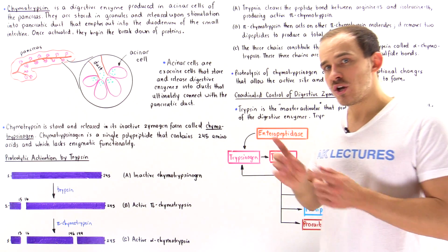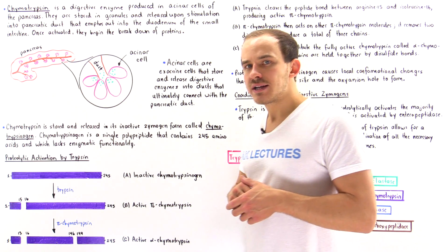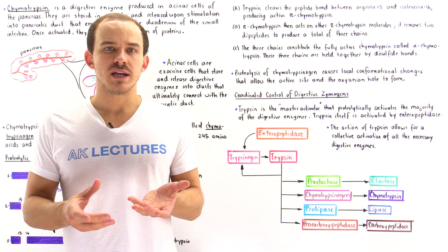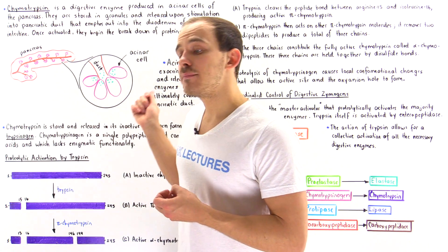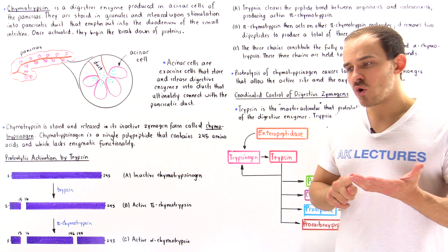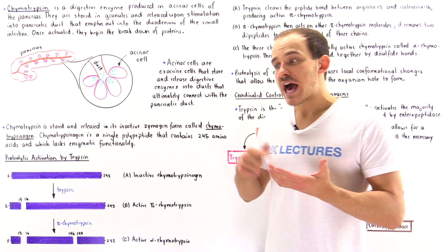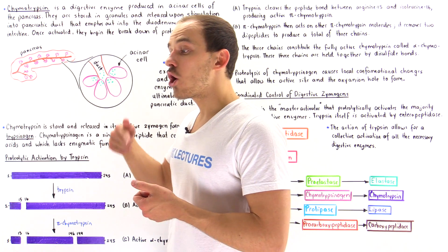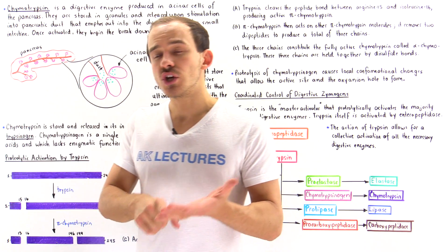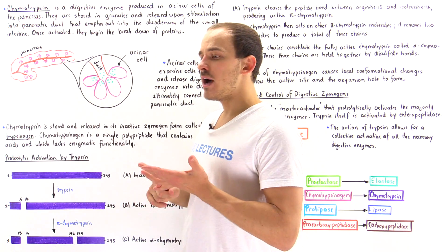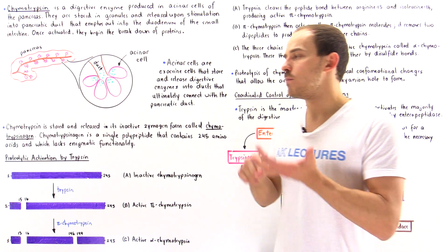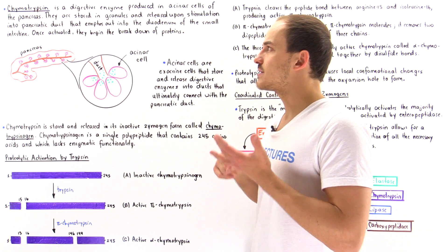We already spoke about chymotrypsin in detail when we discussed proteases. Chymotrypsin is an example of a serine protease that breaks peptide bonds on the carboxyl side of specific amino acids — those amino acids that contain bulky hydrophobic aromatic side chains.